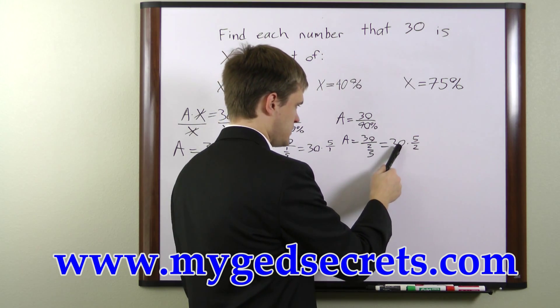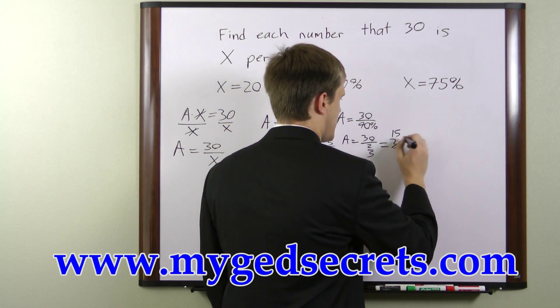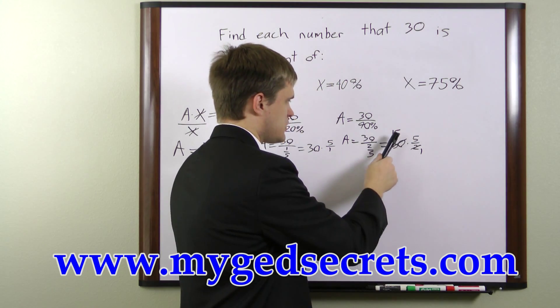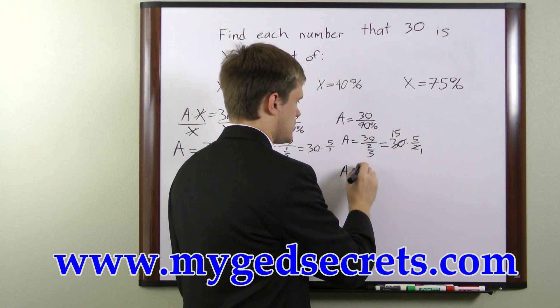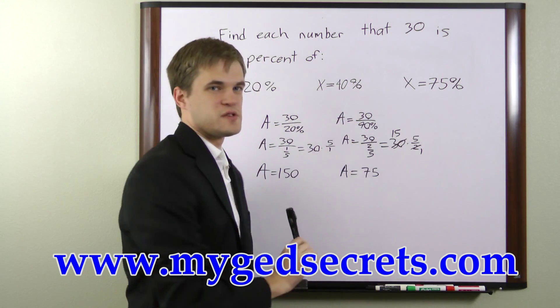We can cancel here by dividing 30 and 2 by 2, giving us 15 and 1. Multiplying this out, 15 times 5 is 75. So 30 is 40% of 75.